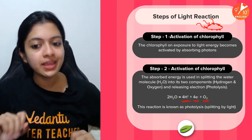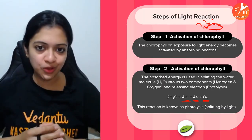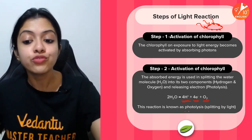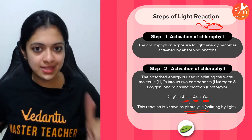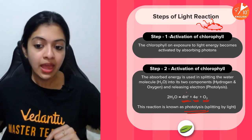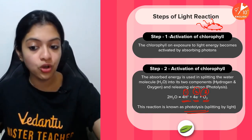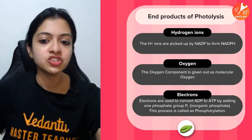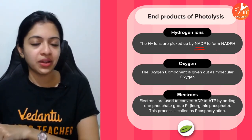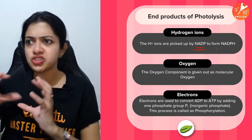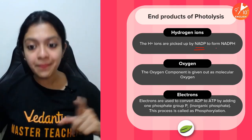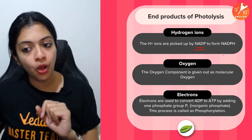This splitting of water in the presence of light is called photolysis. It splits water into four H⁺ ions, four electrons, and oxygen. Each of these three products has its own fate, like three passengers arriving at an airport being picked up by different people. The hydrogen ions formed at the end of photolysis are picked up by NADP to form NADPH.